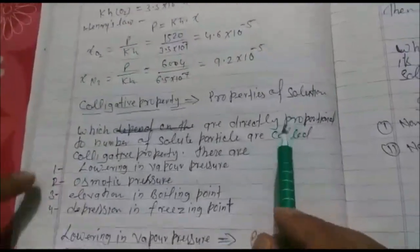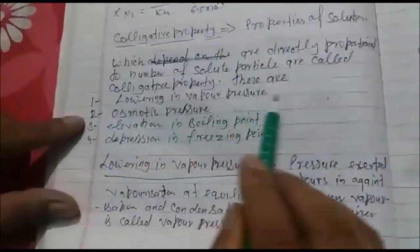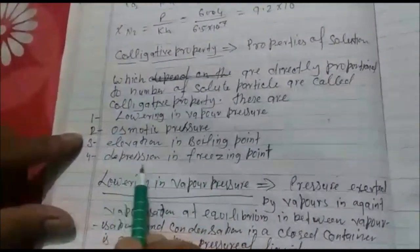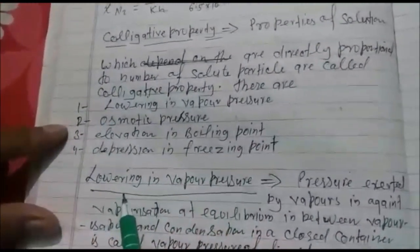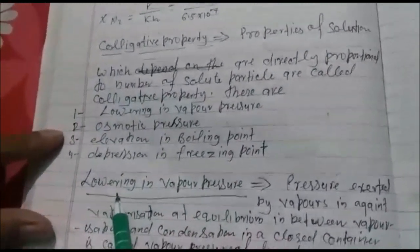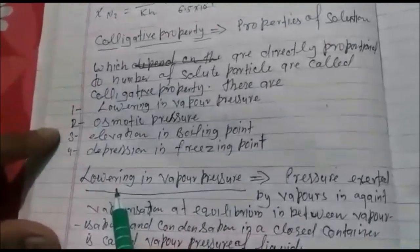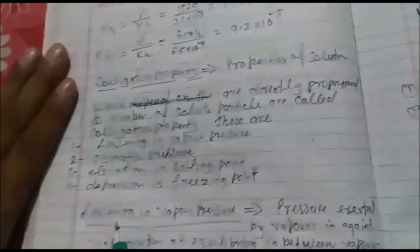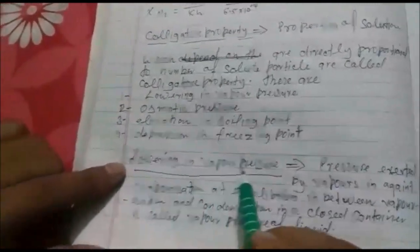And these properties are lowering in vapor pressure, osmotic pressure, elevation in boiling point, depression in freezing point. So out of these four properties we will discuss one by one each topic in this chapter. The first topic is lowering in vapor pressure.